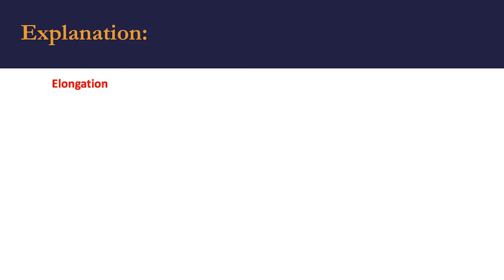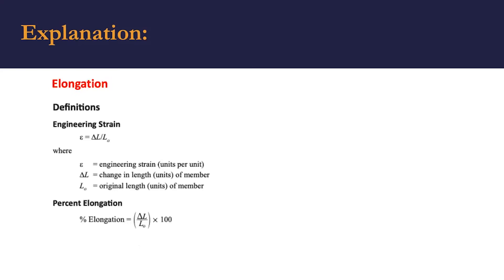When you type the word elongation, you're going to find a page with definitions. It's going to bring you to a specific equation — percent elongation — and in order to calculate that, you need the change in length of the rod over the original length of the rod. Now, we don't have the change in length; that's what we're looking for.